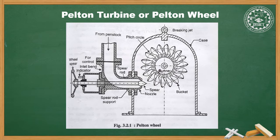Next is the braking jet. When the jet of water is completely closed by pushing the spear forward, the amount of water striking the runner becomes zero, but the runner keeps moving due to inertia. To stop the runner in the shortest possible time, a small nozzle is provided which directs a jet of water at the back of the vanes or cup. This jet is called the braking jet.